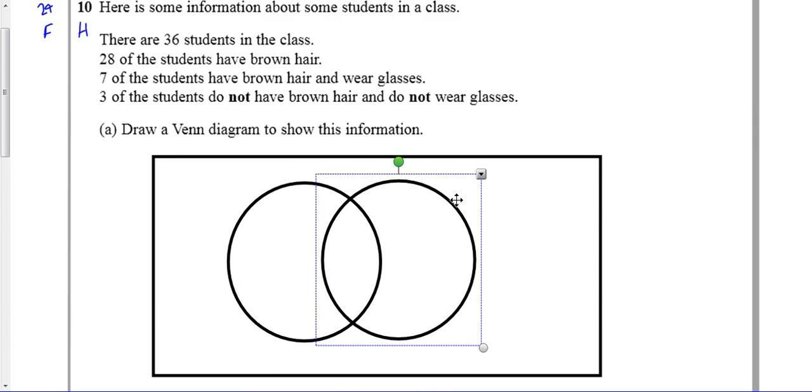One of my circles represents the students who have brown hair, the other bit of my circle represents students who wear glasses, and then the bit in the middle is the people that have both.